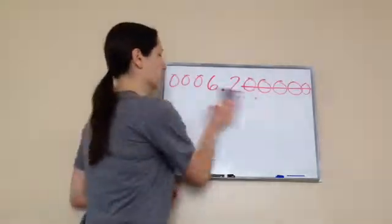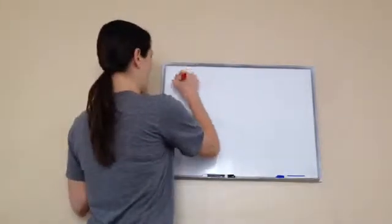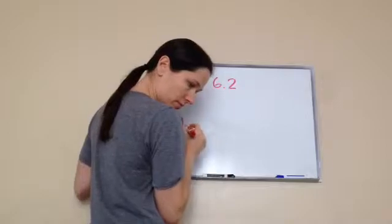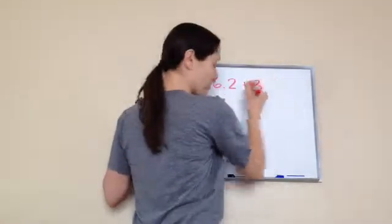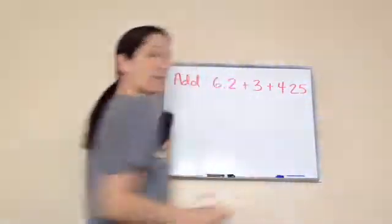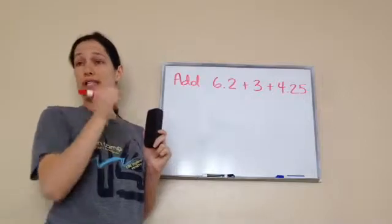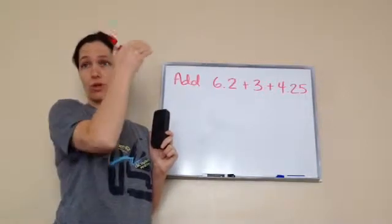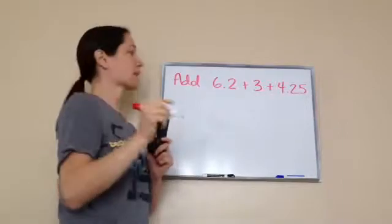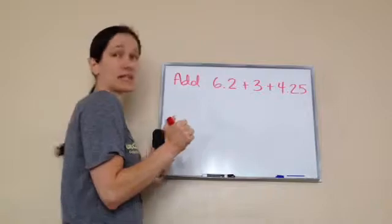You got it? Okay, now, so let's take this. They tell me to add this. Add 6.2 plus 3 plus 4.25. Do you remember the most important rule when you're adding or subtracting decimals? You have to line up something. Line up the decimals? Line up the decimals. That's the most important thing you can remember when you're adding or subtracting decimals.